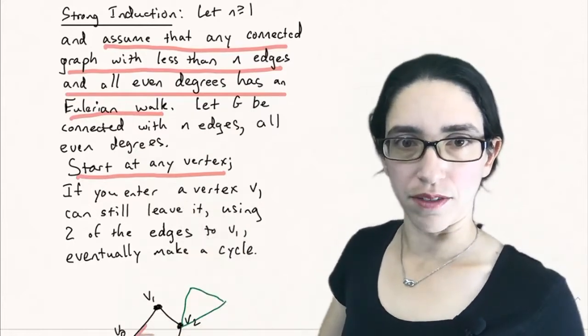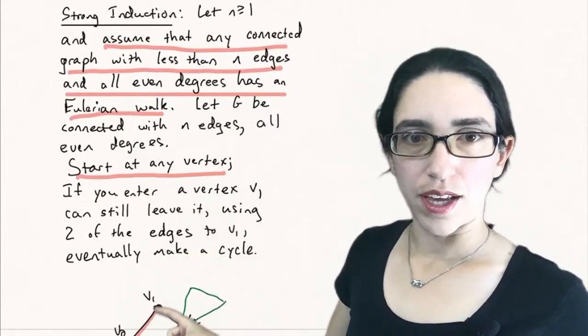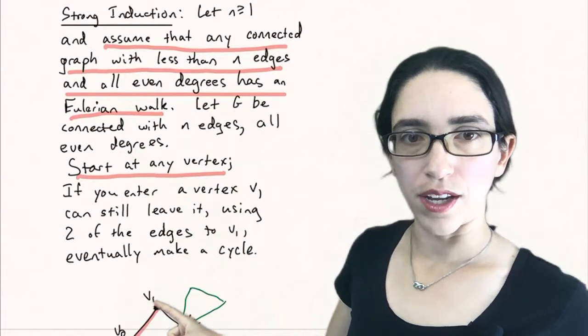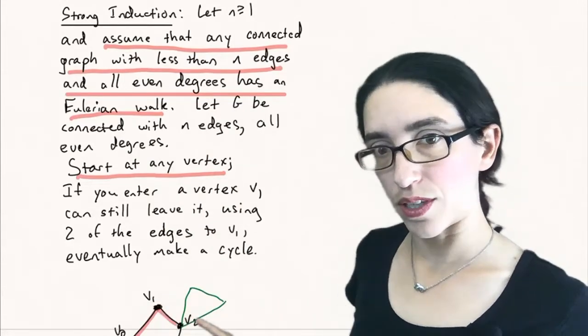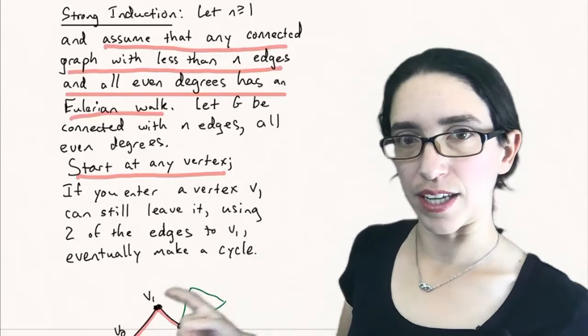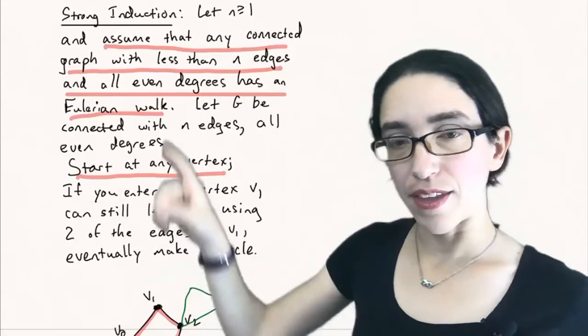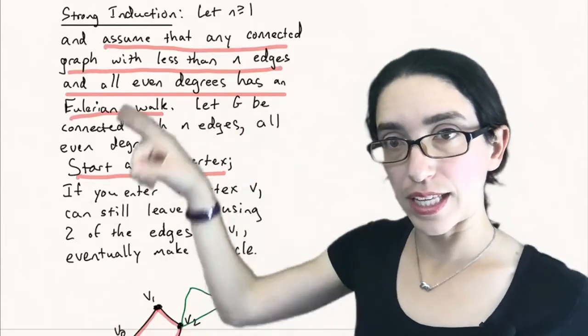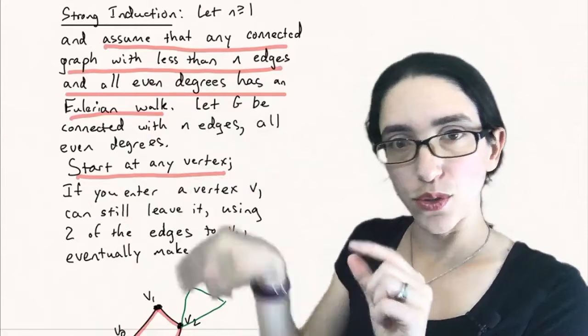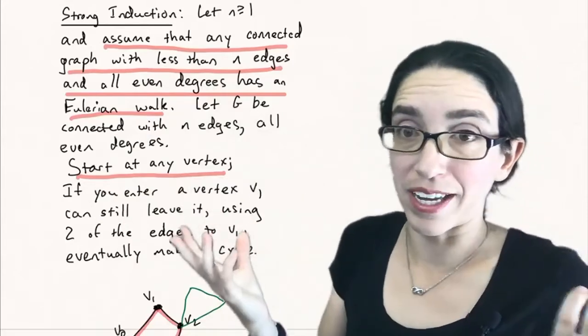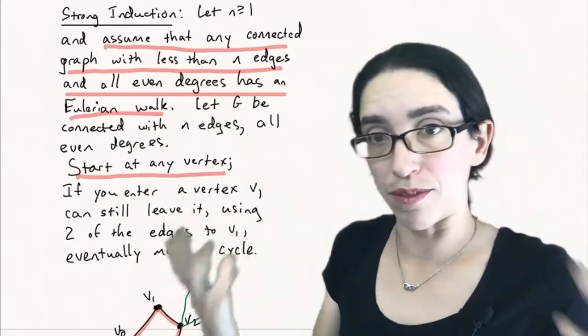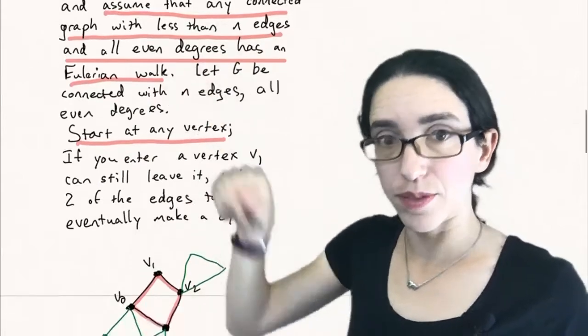Now let's construct an Eulerian walk using this strong induction hypothesis. Start at any vertex, like v0. If you enter a vertex like v1, since v1 has even degree and you've only used one of its edges, you can still exit it. You can always exit it and get to some vertex v2. And you can keep walking around the graph until you repeat some vertex. You'll eventually make a cycle because there's only finitely many vertices.